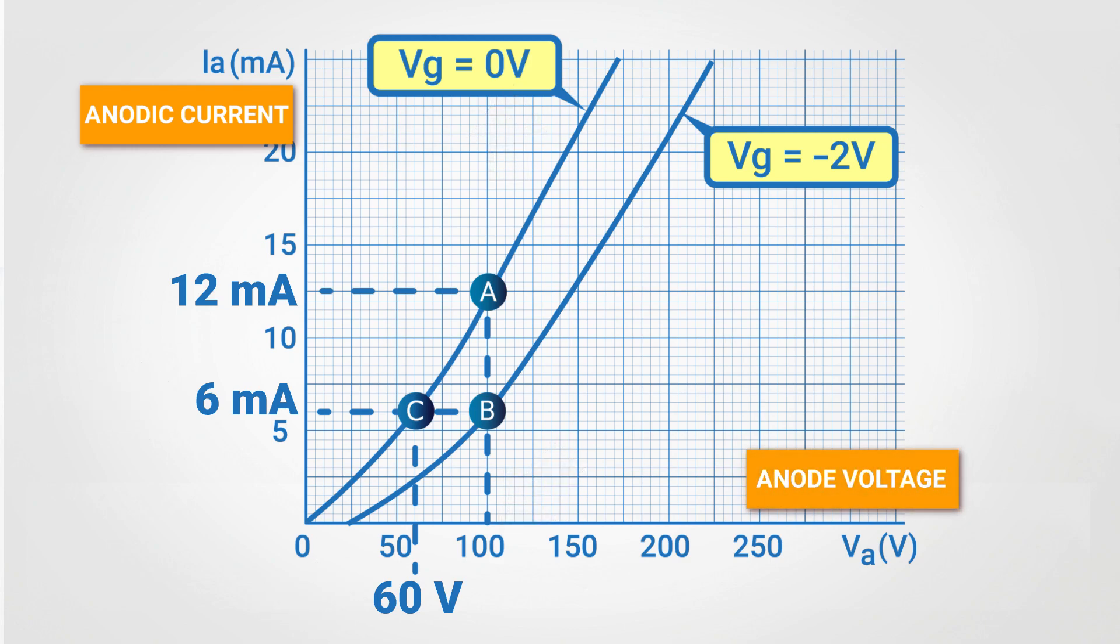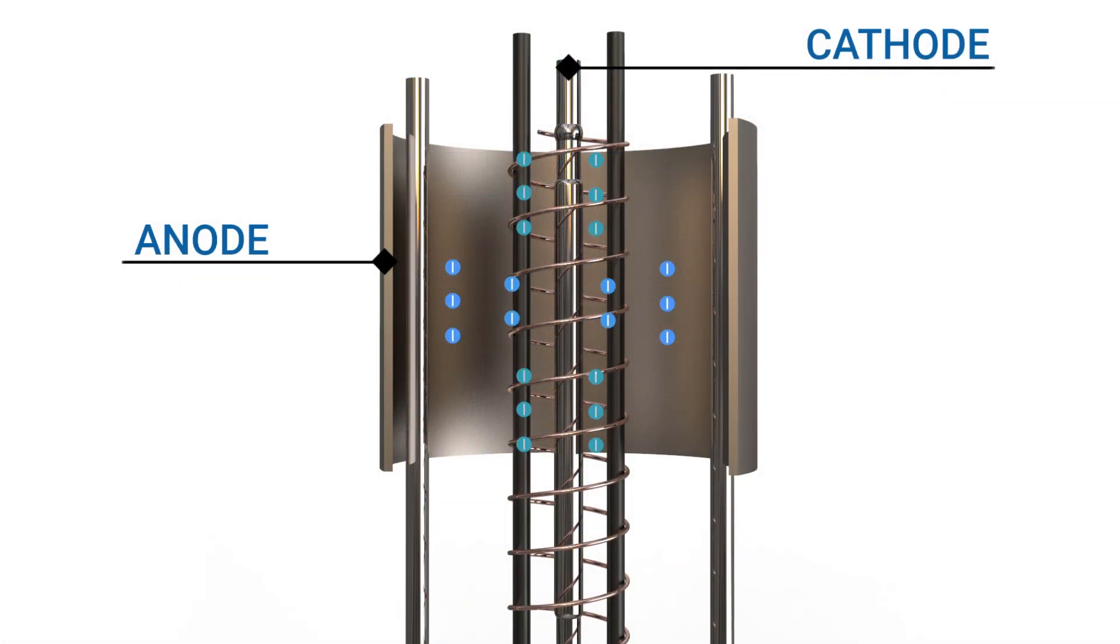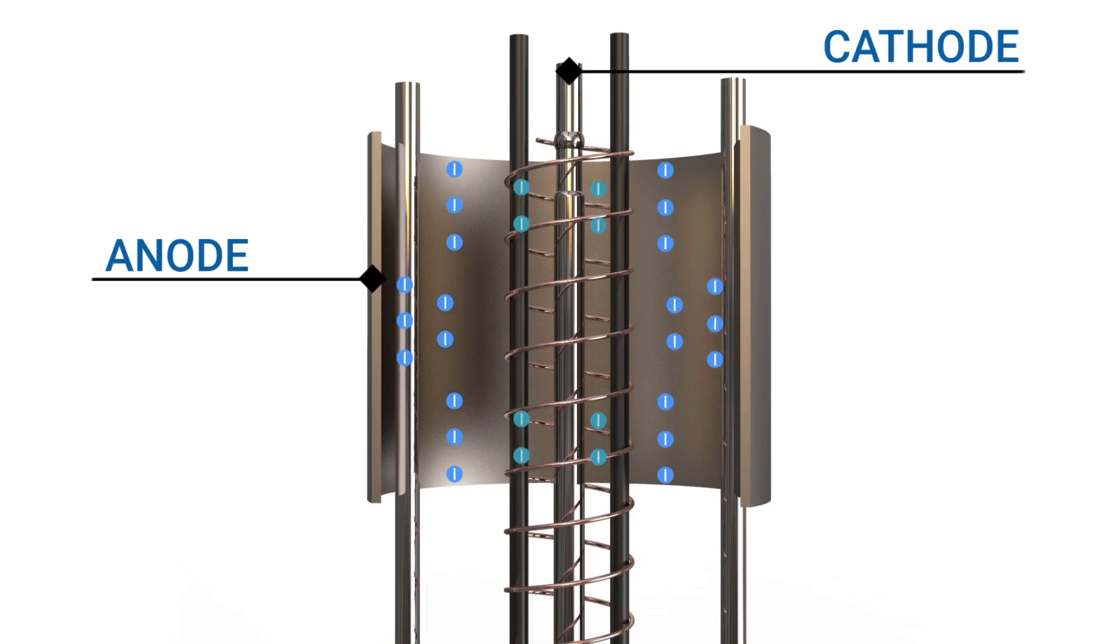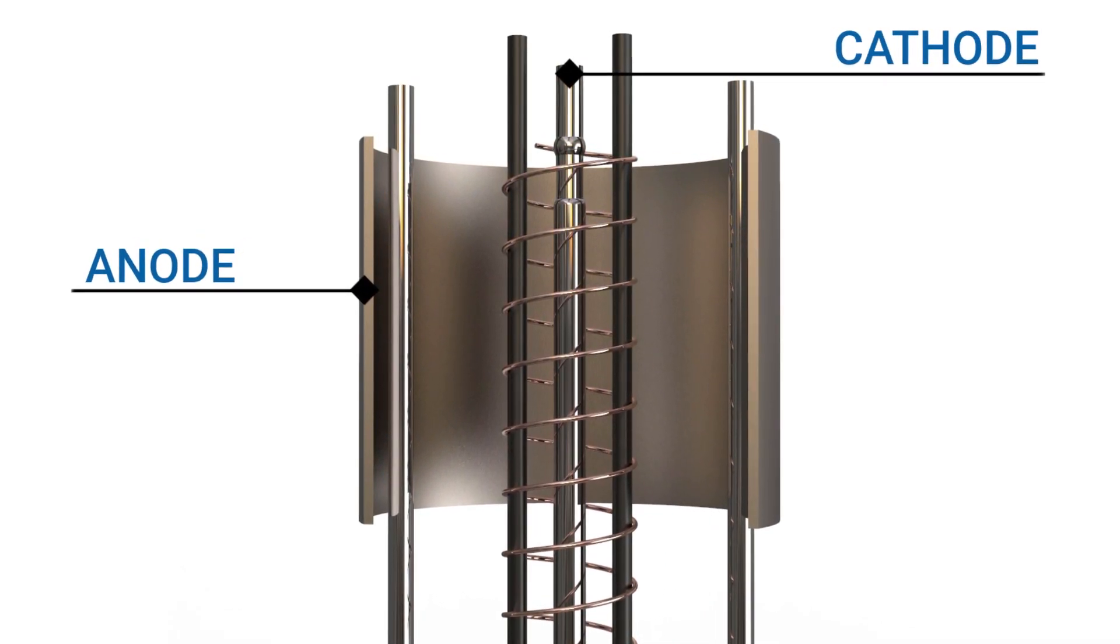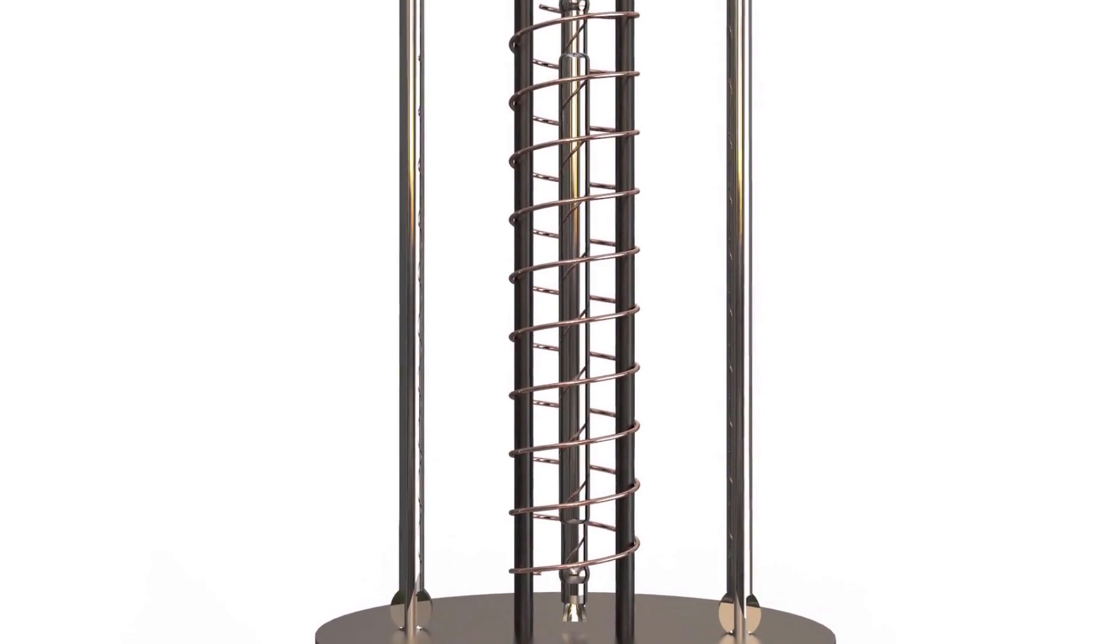From all these considerations, we can assume that if we want to change the grid voltage to reduce the anodic current from 12mA to 6mA, a simple variation from 0V to minus 2V is required. On the other hand, if we want to change the anodic voltage and achieve the same result, a variation from 100V to 60V is required. This means a 40V variation, which is 20 times greater than the previous one. Thanks to the small distance between the grid and the cathode, the grid has more effective action on the anodic current compared to the anode, which is farther away from the cathode. We can conclude by saying that the tri-grid is able to control the anodic current by changing its own voltage.